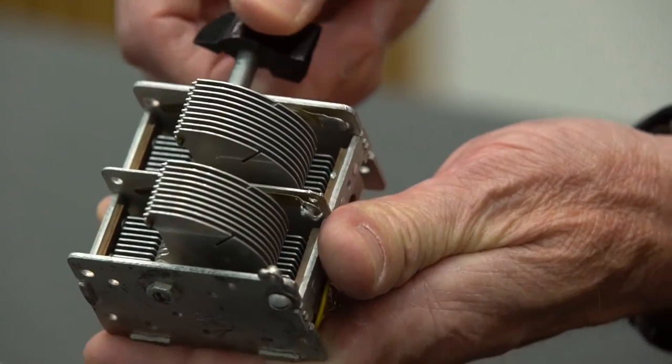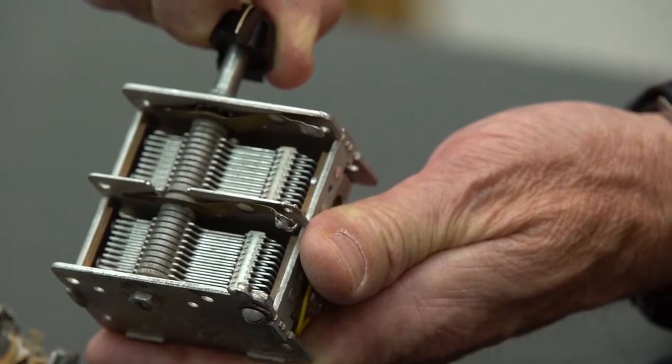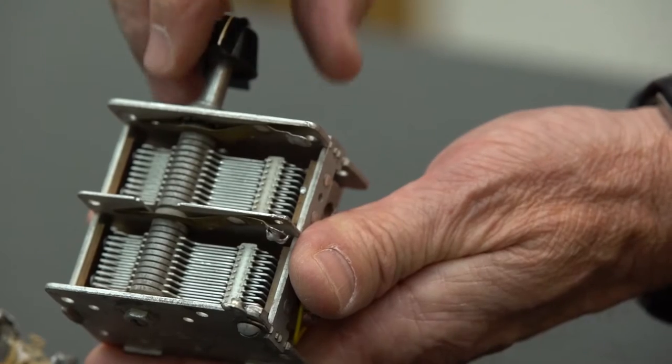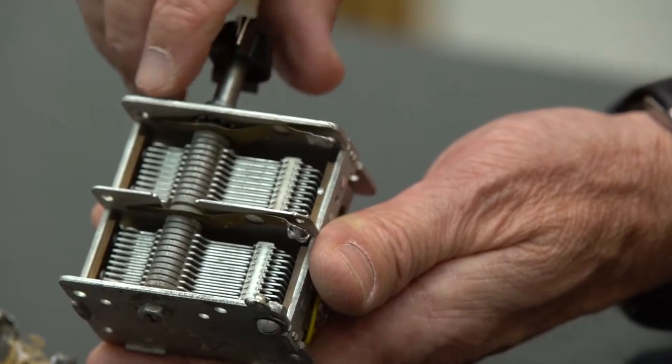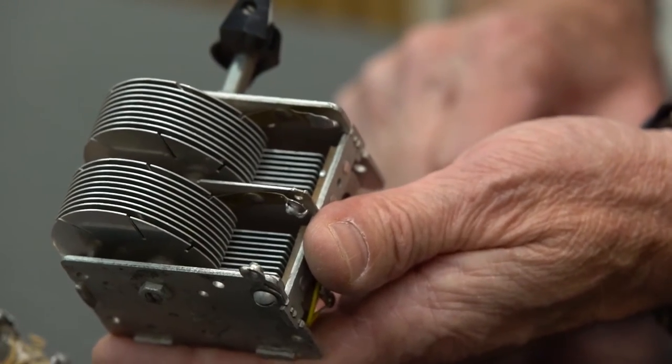Here they're partially overlapping. And here they're fully overlapping. And so here you get the maximum possible capacitance. And here you get zero capacitance. That's a variable capacitor.